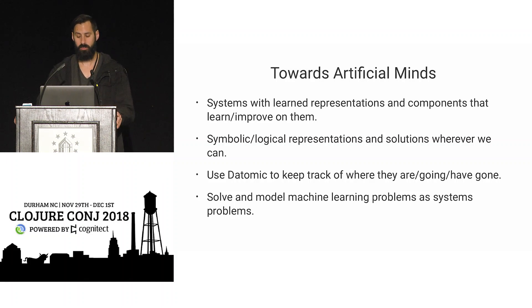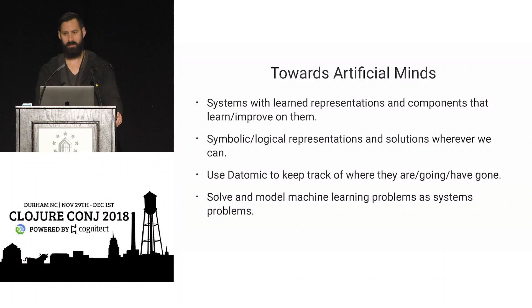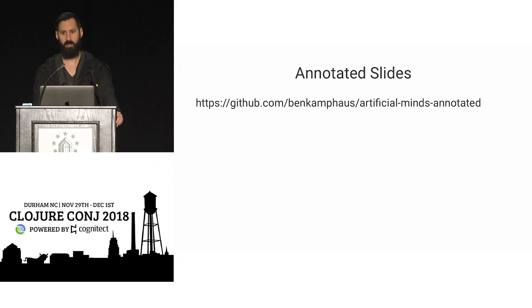To get to powerful AI systems — things we'd call minds — we're going to need all of this. We'll need to be able to combine and do a hybrid composition of symbolic and connectionist parts. If we're ambitious, we can take advantage of the primitives we have in Clojure and Datomic to dynamically evolve these systems over time.